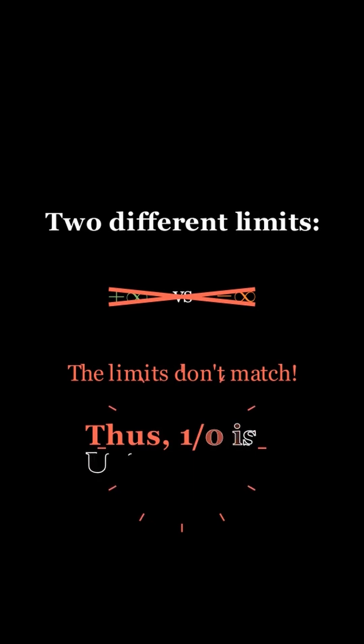Now what happened here? Well, we have two different limits, which means y approaches different values as we approach 0 from both sides. Since the limits don't match, 1 divided by 0 is undefined.